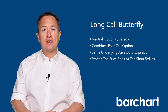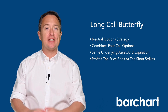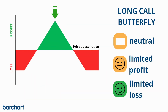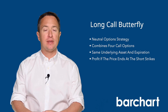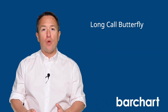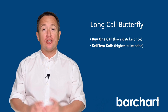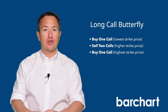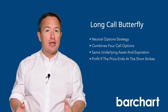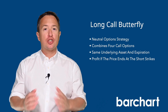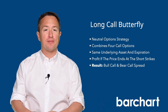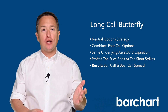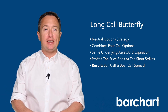The maximum profit condition happens if the asset's price ends at exactly the middle strike price. However, you'll also make a profit so long as the underlying trades between the break-even points at expiration. To set up the trade, you'll buy one call at a lower strike price, sell two calls at a middle strike, and buy one call at the highest strike. All options will have the same underlying asset and expiration date, with the strike prices equally spaced. The result is a bull call and a bear call spread that results in a net debit.